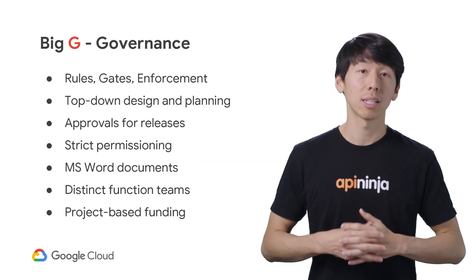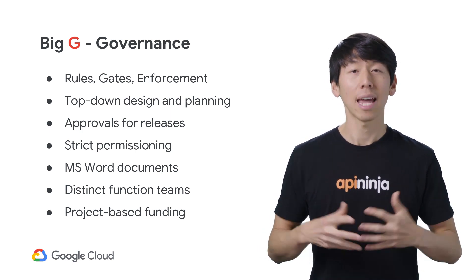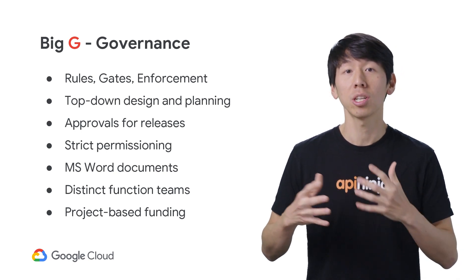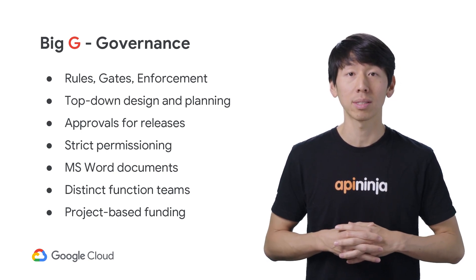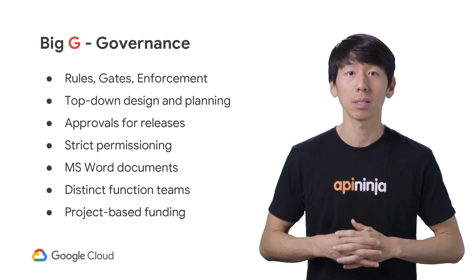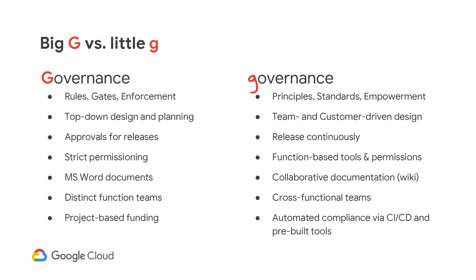Big G governance is what most companies end up with. This assumes that the teams are not trusted to do the right thing and results in heavy gating. Committees like change approval boards are formed to manually audit any change pushed to deployed systems. Policies and procedures are written into heavyweight Word documents and teams are split by function as they are not trusted to work together. Little G governance is harder for an organization to swallow, as responsibility and accountability is pushed down to where the decision needs to be made. It provides enough governance to keep the teams on the right path, but doesn't seek to slow delivery.